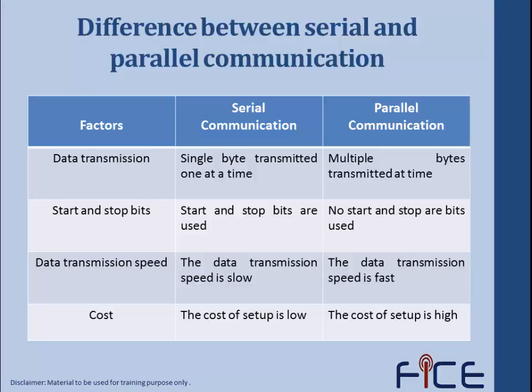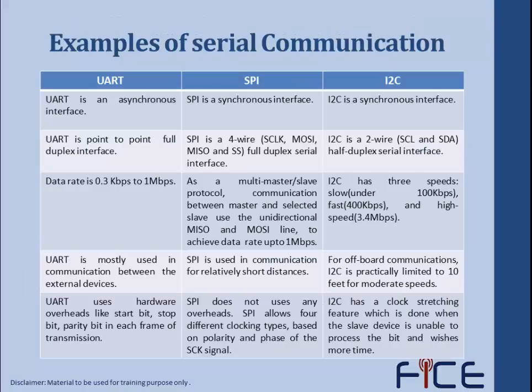In serial communication, a single byte is transmitted at a time, while in parallel communication multiple bytes are transmitted at a time. Serial communication uses start and stop bits for transmission, while parallel communication does not require start or stop bits. Data transmission speed is slow in serial communication but fast in parallel communication, because serial transmits each bit one at a time while parallel transmits all bits simultaneously. The cost of setup is low in serial communication and high in parallel communication.